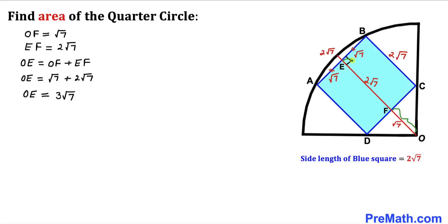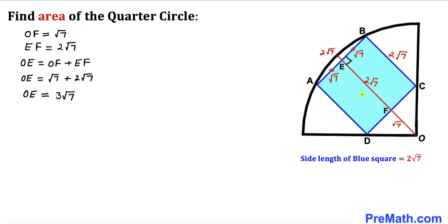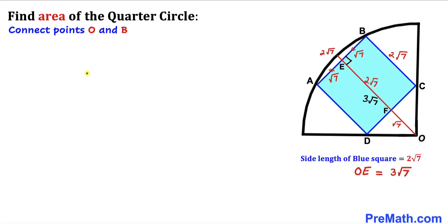We can now see that OF = √7 and EF = 2√7. Therefore the total length OE is the sum of these two segments: OE = OF + EF = √7 + 2√7 = 3√7.